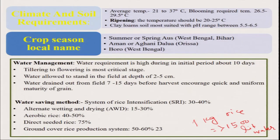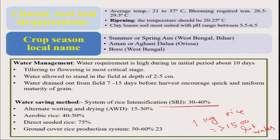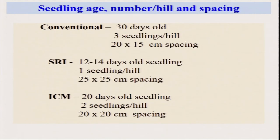To address water requirements, we can go for modern rice cultivation practices like SRI — System of Rice Intensification — or ICM — Integrated Crop Management — where we can produce more rice under organic farming. The water requirement will be less because SRI reduces water use by 30 to 40 percent, saving a huge amount of water. It is important to understand the differences between different rice cultivation techniques.